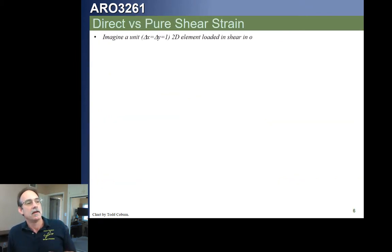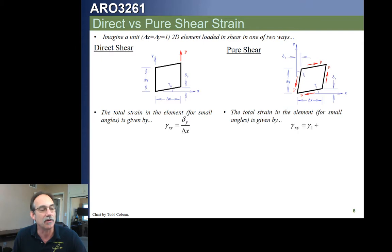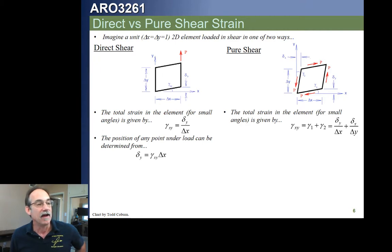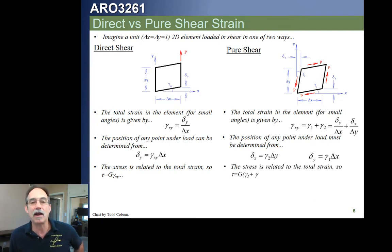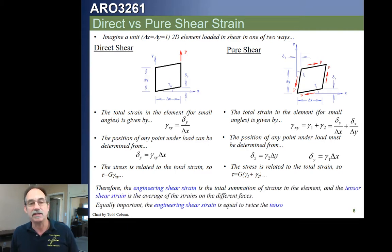In summary: the strain for direct shear is a single gamma value; for pure shear, we add the two strains together to get the total. To relate stresses to strains through Hooke's Law — remember stress equals E times epsilon — for shear elements it's: shear stress tau equals G times gamma, where G is the shear modulus. If you just remember stress equals E-epsilon and convert to shear values, tau equals G gamma.